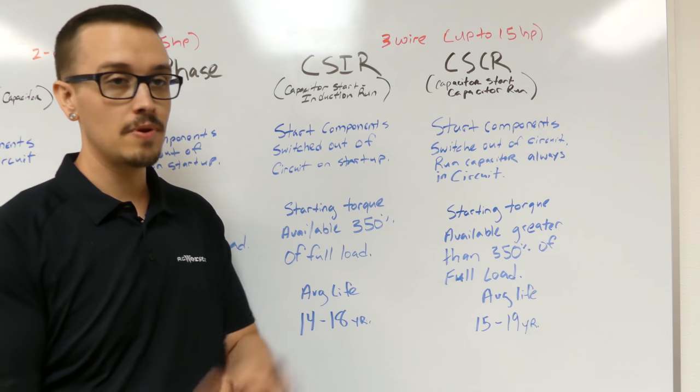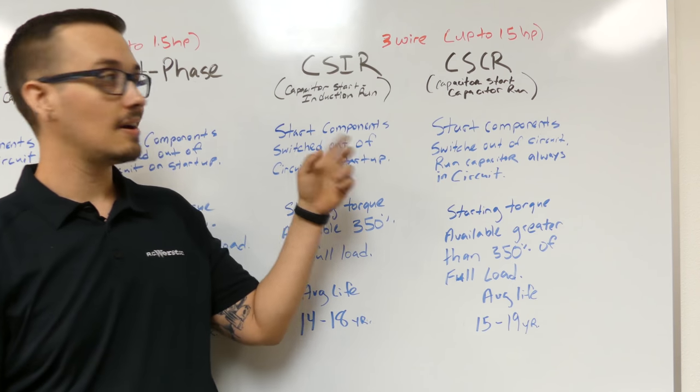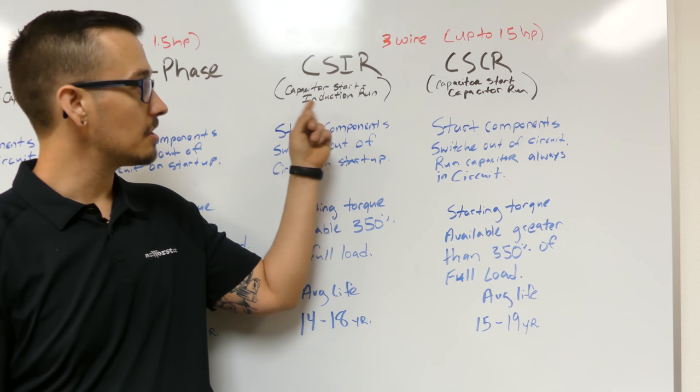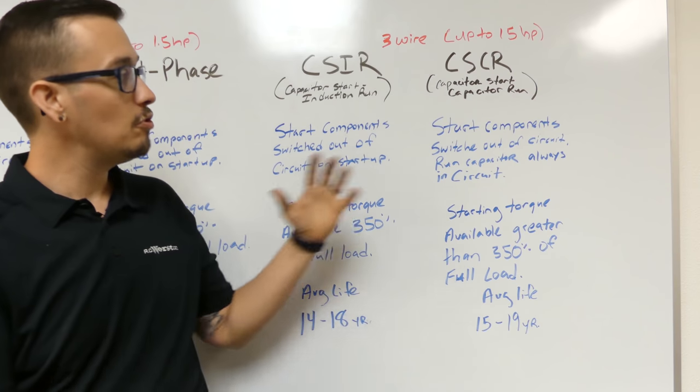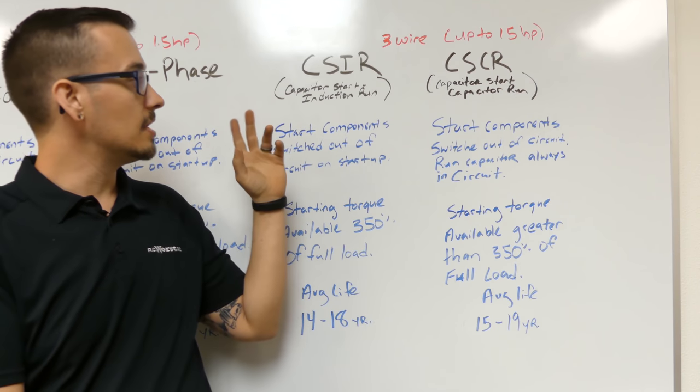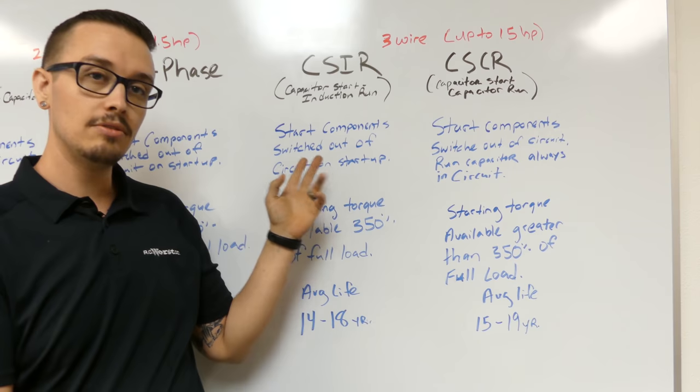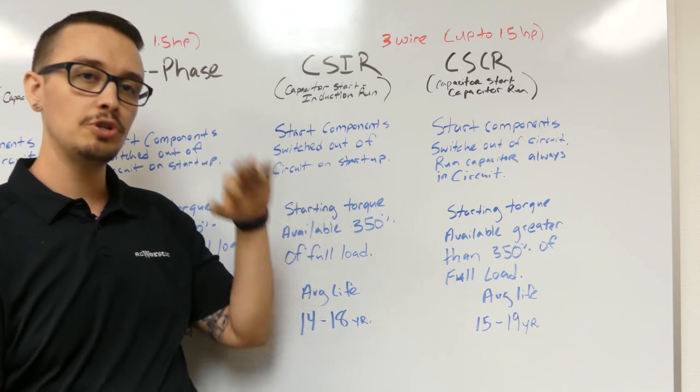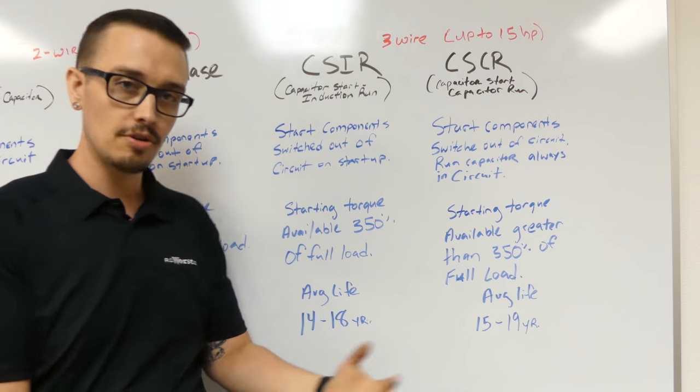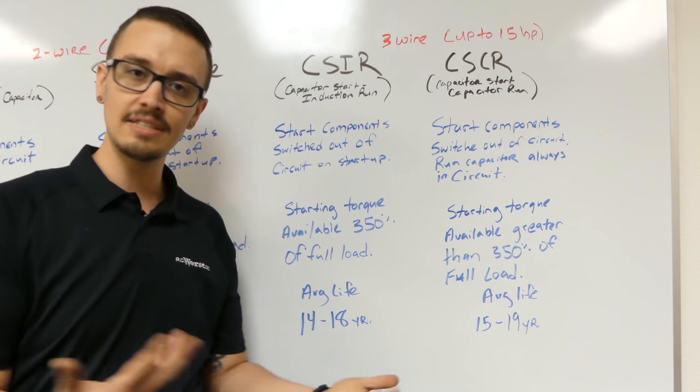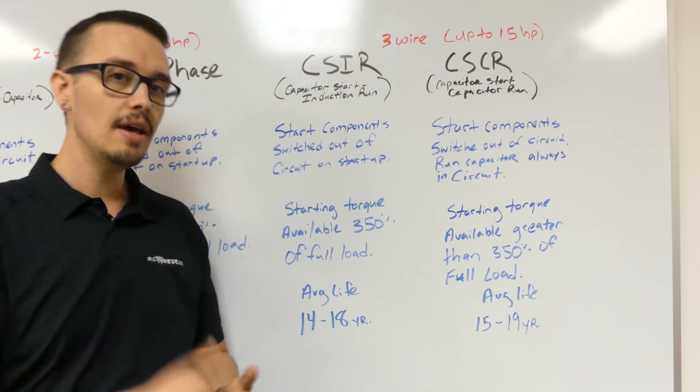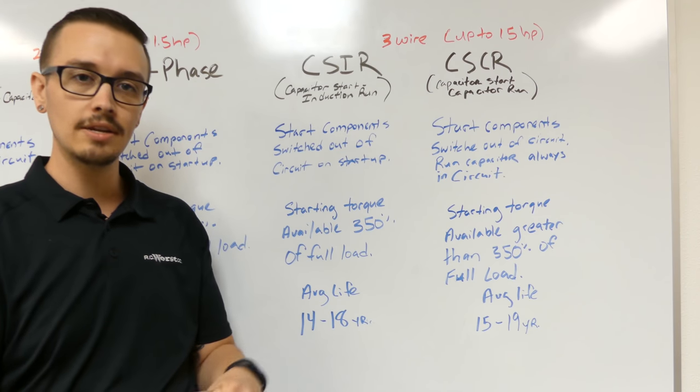All right, so here we are with the three wire motors. Again, we've got the CSIR, which is Capacitor Start Induction Run, or the CSCR, Capacitor Start Capacitor Run. Two big differences between these is on the CSIR panels, the starting components actually switch out of the circuit once the startup process is complete. Basically, once the motor gets up to roughly 70-75% of speed, the starting components and the winding is going to disengage.